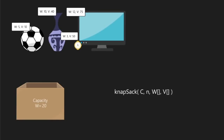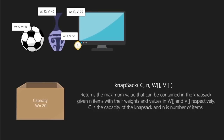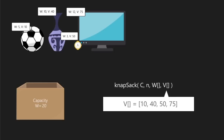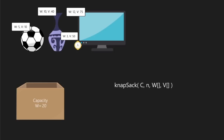Let us assume a function that returns the maximum value that can be grabbed in a knapsack of capacity w for n items. The parameters are the capacity of the knapsack and n, the number of items. w and v are one-dimensional arrays which store weights and values of these four items. In our case the capacity is 20 and the number of items is 4.